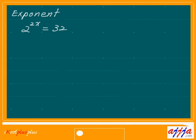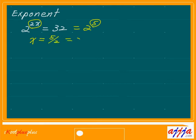Okay, listen to me. On this one, as soon as you see 32, what comes to your mind? I told you to remember this one — 32 means 2 to the 5th power. Very popular number, right? That means you just concentrate on 2x and 5. Simple. So x equals 5 divided by 2, which is 5 over 2, which is 2.5. Either one is okay.